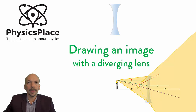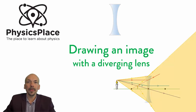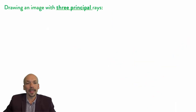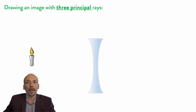Welcome to the Physics Place, the place to learn about physics. In this video I'm going to explain how you can draw an image using a diverging lens. If you want to draw an image with a lens, you need three principal rays. Before we start, we first need a lens and an object, and we will draw the image from this object with this lens.